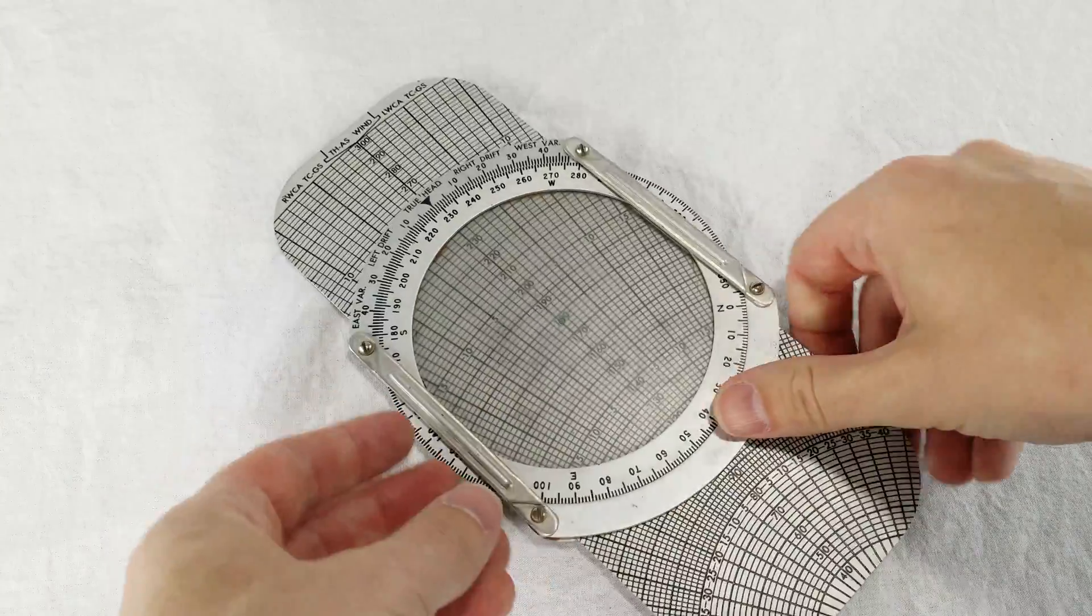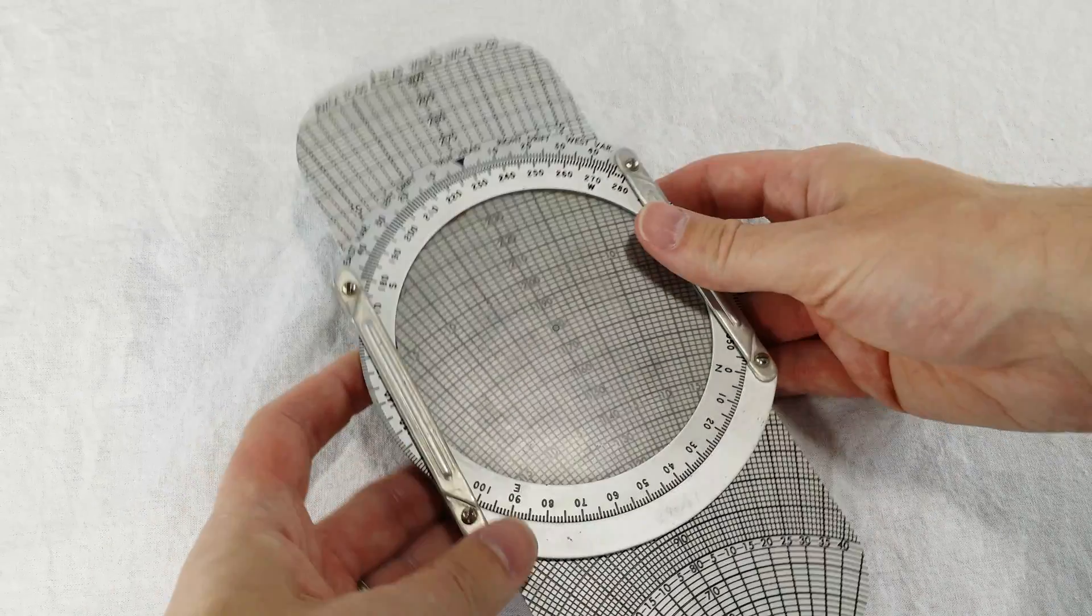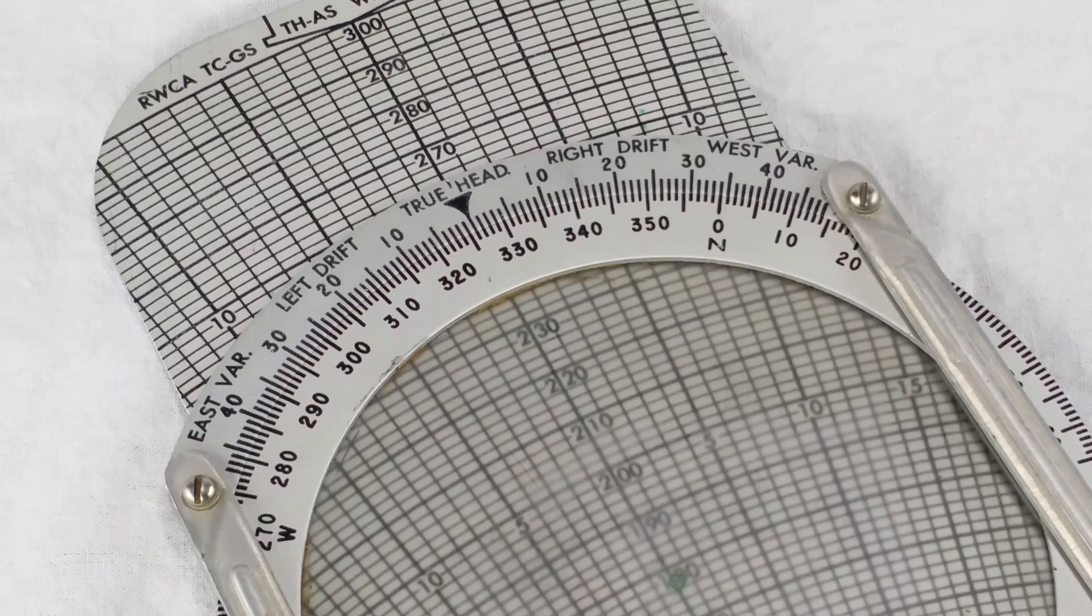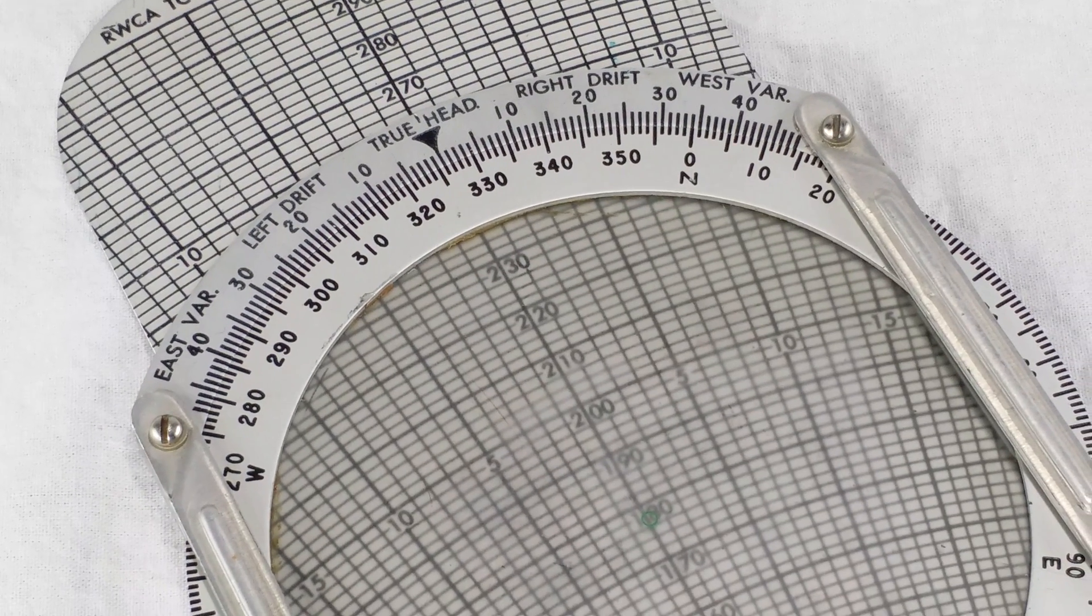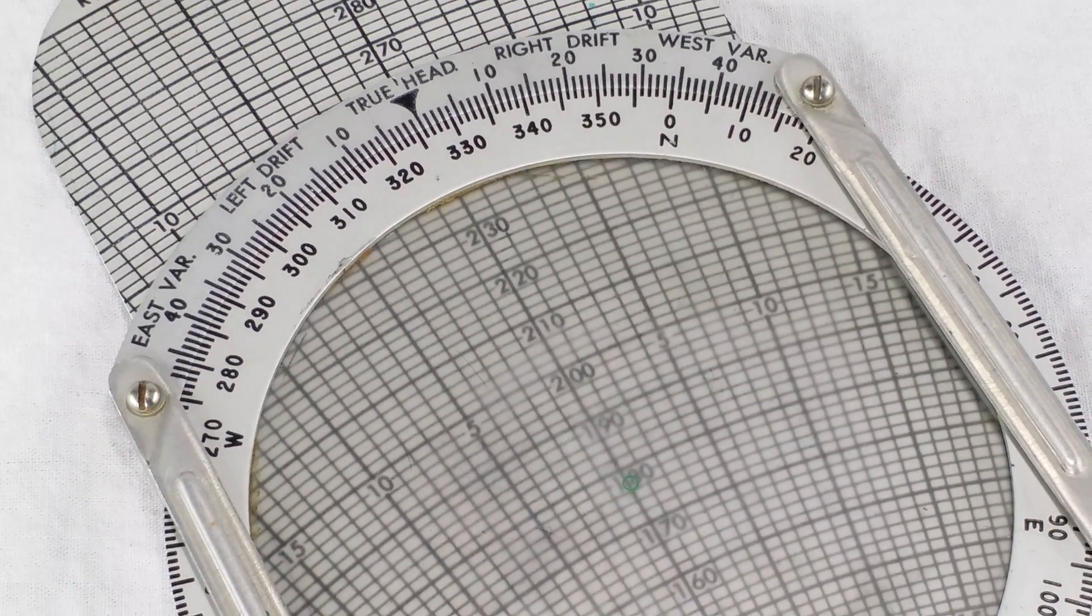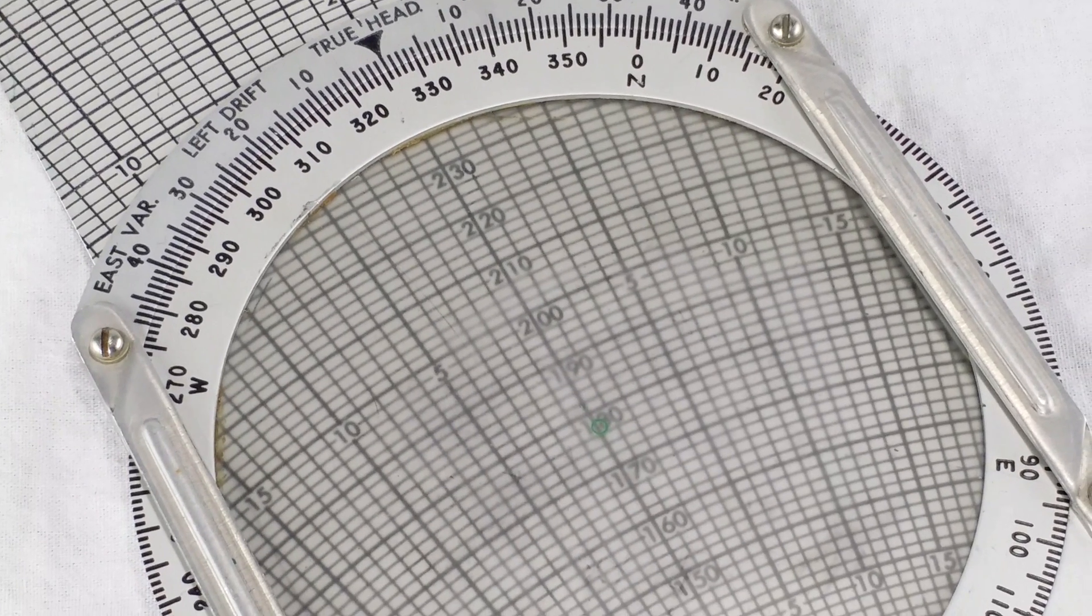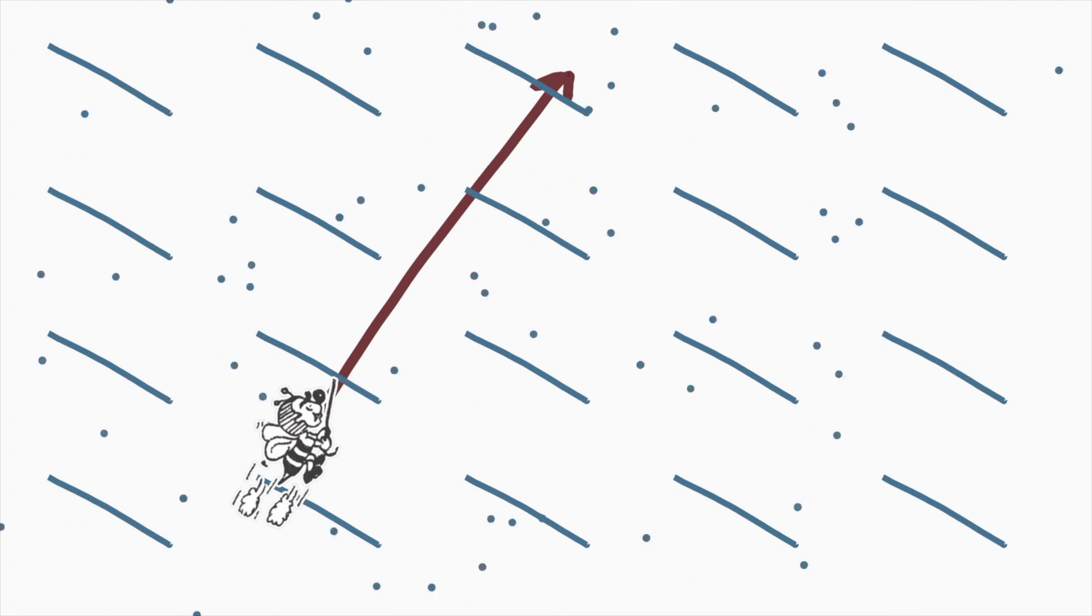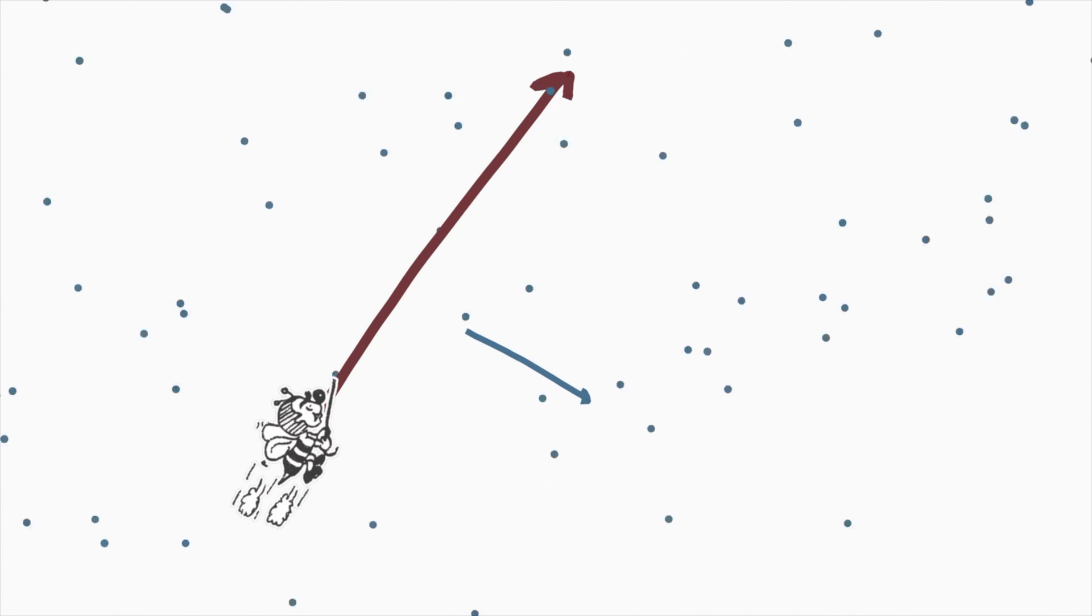What really catches my eye is the other side. A rotating screen in front of a slightly curvy grid. This side is used for calculating drift from the wind. Here's the idea. Your plane has its own speed and direction, but that interacts with the speed and direction of the wind. Maybe the wind pushes you, you go a little bit faster, maybe slower, maybe to the side or whatever. The best way to represent this mathematically is using vectors. My plane has a direction and a speed, and I represent this like an arrow. It points in the direction I'm going, and the length of the arrow is how fast I'm going.